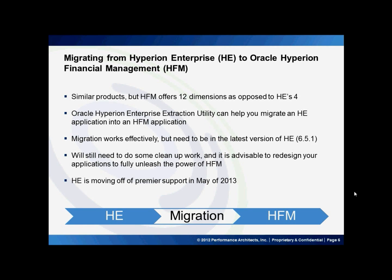Now we'll talk about migrating from Hyperion Enterprise to Oracle Hyperion Financial Management — moving from HE to HFM. If you're using HE and are considering replacement, you should seriously consider migrating to HFM. These are similar products but HFM offers 12 dimensions as opposed to HE's four, and migrating would help add this dimensionality. The Oracle Hyperion Enterprise Extraction Utility can help you migrate an HE application into an HFM application, converting metadata along with the full application. This migration works effectively but you'll need to be on the latest version of HE, which is 6.5.1. It is advisable to redesign your applications to fully unleash the power of HFM.